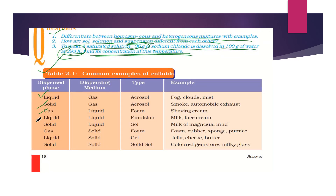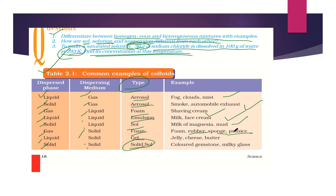Let's now see some common examples of colloids. The dispersed phase can be liquid, solid, or gas, and the dispersing medium can also vary. The types of colloids include aerosol, foam, emulsion, sol, gel, and solid sol. Examples: shaving cream is a foam; milk and face cream are emulsions; milk of magnesia and mud are sols; foam rubber, sponge, and pumice stone are foams; jelly, cheese, and butter are gels; colored gemstones and milky glass are solid sols; fogs, clouds, mist, and smoke/automobile exhaust are aerosols. Please go through these examples as they are important for your exams.